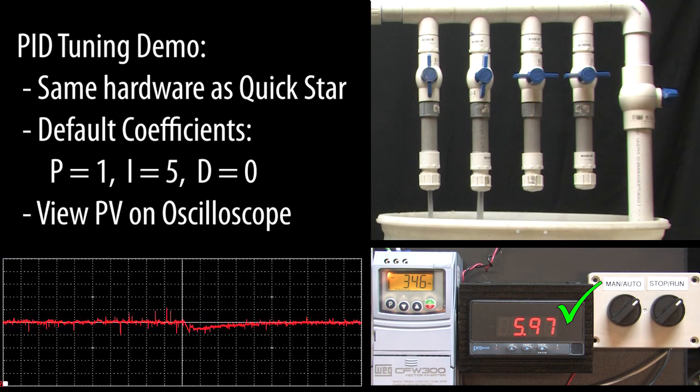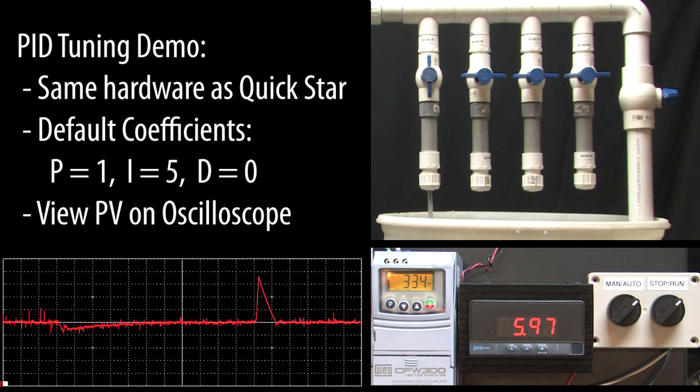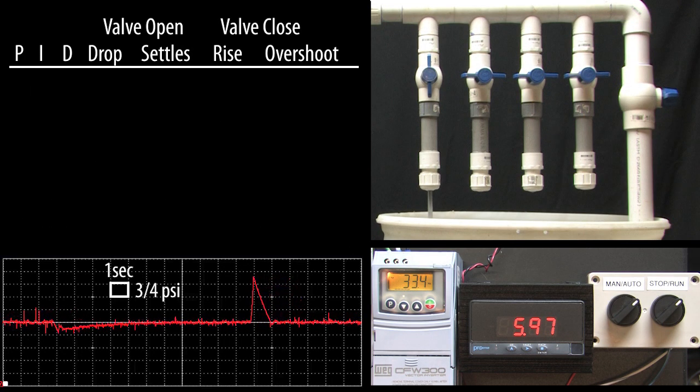I'll close the valve quickly and we see the abrupt pressure increase and then it slowly settles out back at 6 psi over 10-15 seconds. Each of these divisions is 3 quarters of a psi so it looks like the pressure dropped maybe half a psi when we opened the valve and rose 2.5 psi when we closed the valve abruptly.